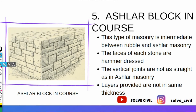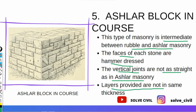The next kind of masonry is ashlar block in course. This type is an intermediate between rubble and ashlar masonry. The faces of each stone are hammer dressed, the vertical joints are not straight as in ashlar masonry, and the layers are not of the same thickness — if one is T1, another is T2, and another is T3.